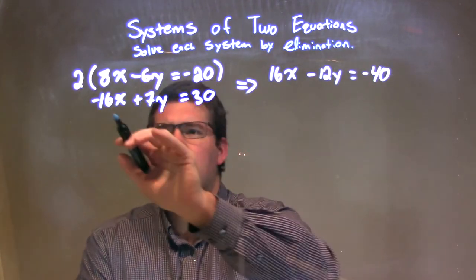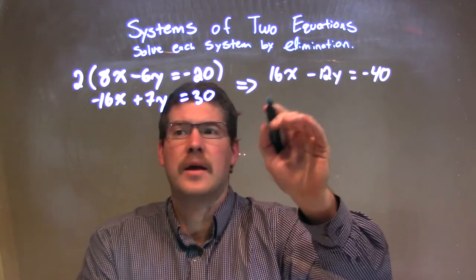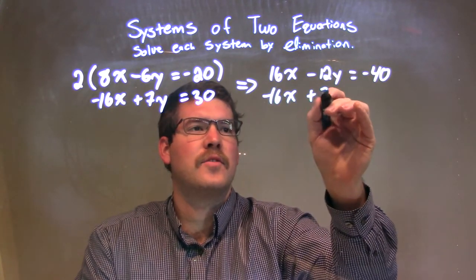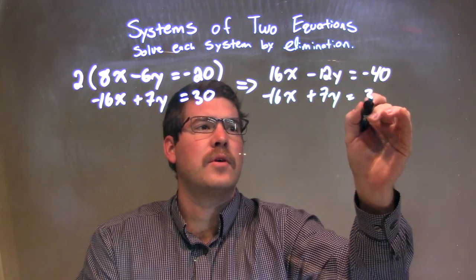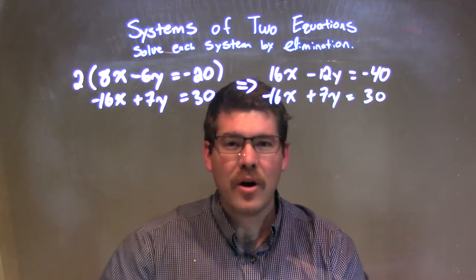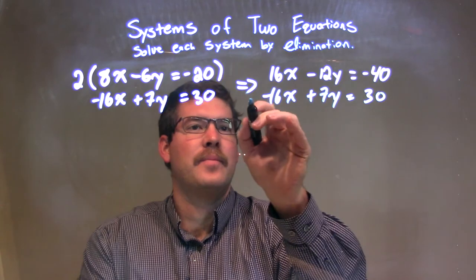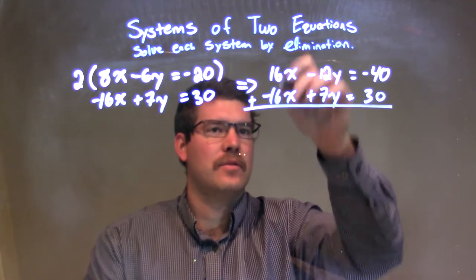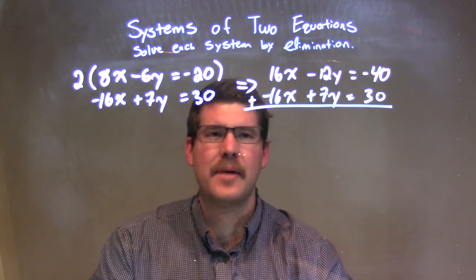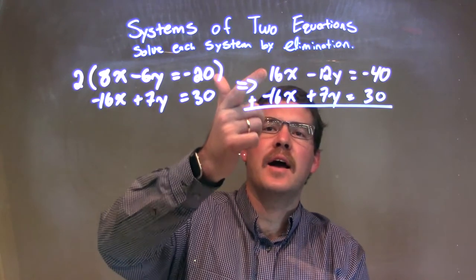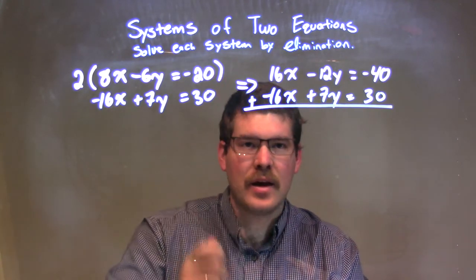If I did this right, I should just be able to transfer the second equation, negative 16x plus 7y equals 30. Now, what I'm going to do is I'm going to add them. Add these two equations straight up and down. 16x and a negative 16x, when I add them together, is a 0.